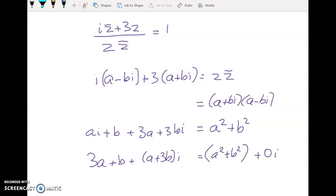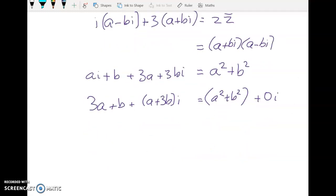So I've got 3a plus b plus a plus 3bi is equal to a squared plus b squared plus 0i. And now I'm going to match up my real part and my imaginary part. So we're going to have a little simultaneous equations of things to solve. So my real part is 3a plus b on the left hand side and it's a squared plus b squared on the right hand side. And the imaginary part is a plus 3b and over here it's 0.